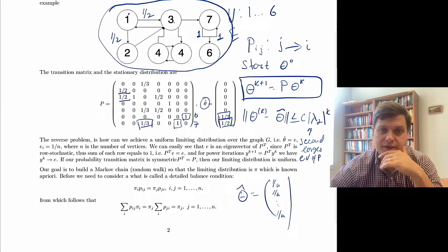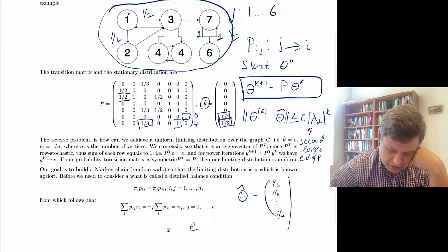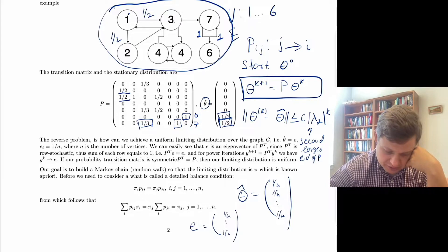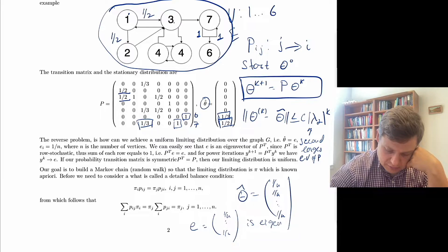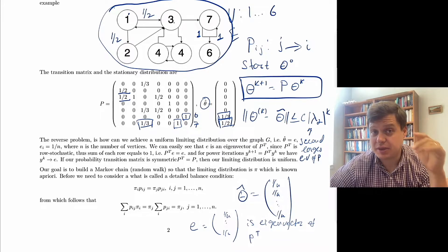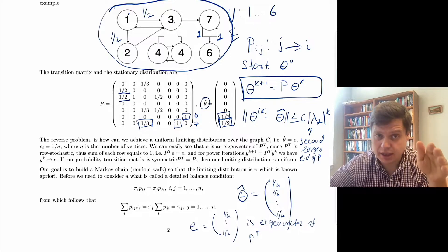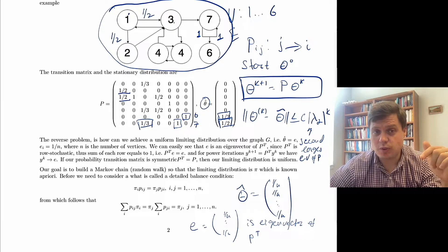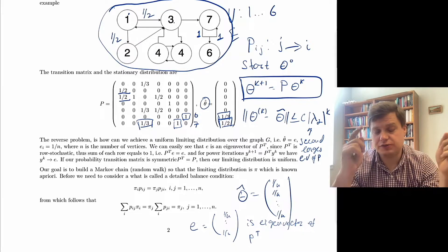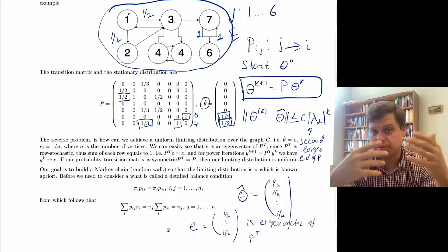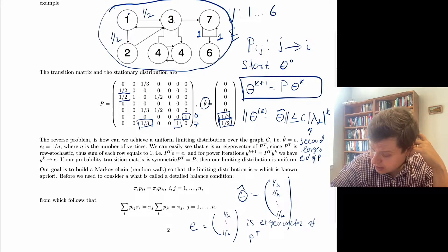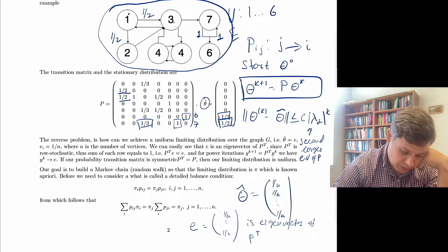We make the following observation: the vector e is the eigenvector of P-transpose. The vector e, which equals 1/n, is the eigenvector corresponding to the uniform distribution. This is because the matrix P is row or column stochastic — if you sum up each of the columns it sums to one — so P-transpose is row stochastic, and the sum across each row equals one because the probability of leaving each node is one.